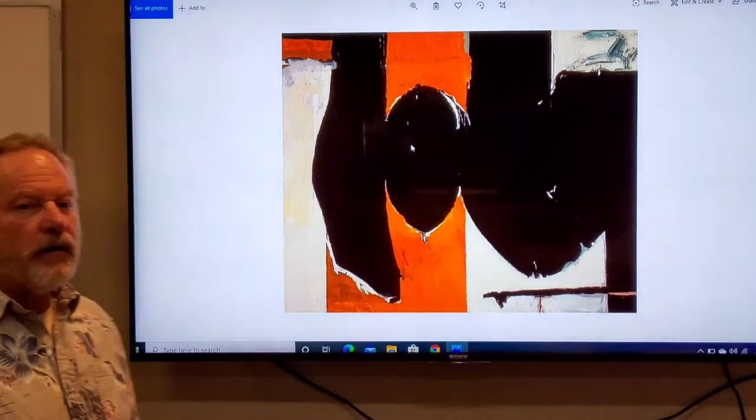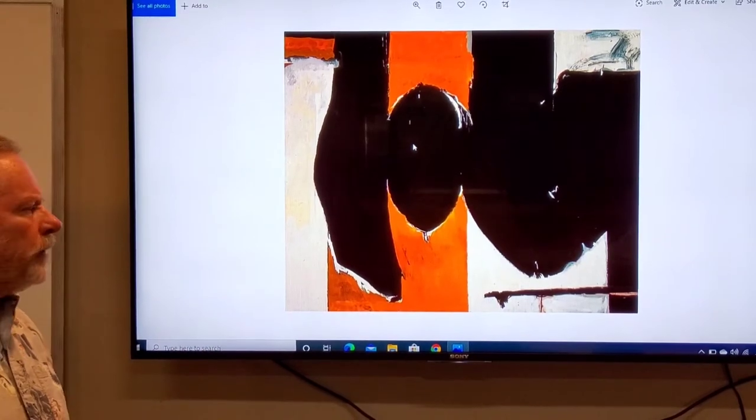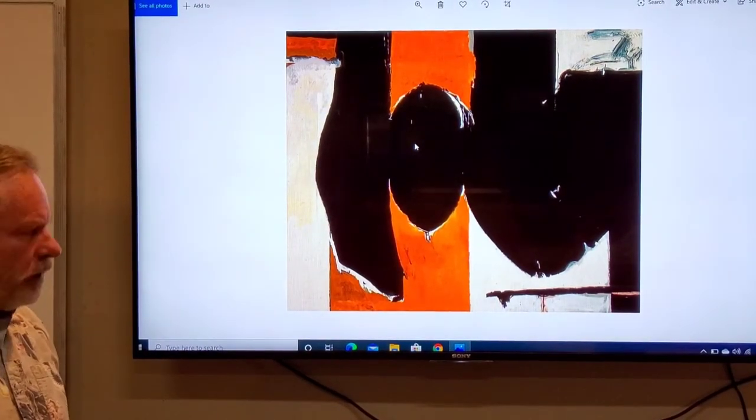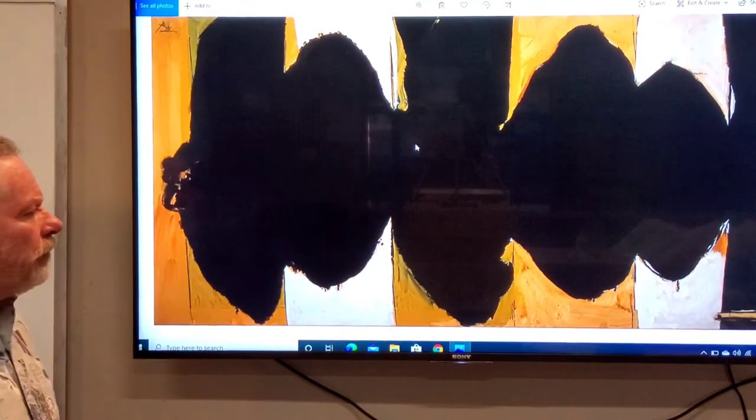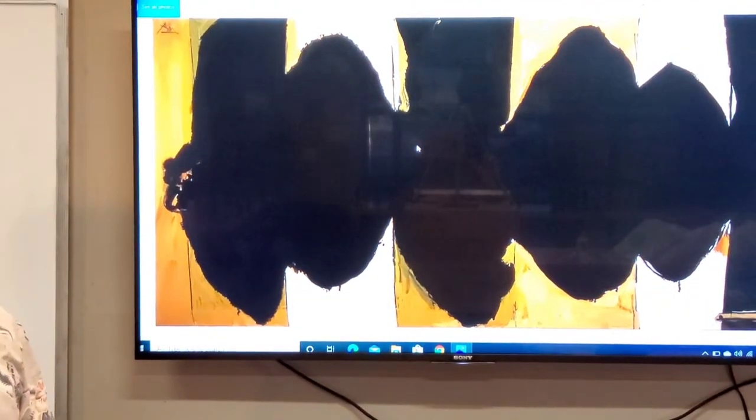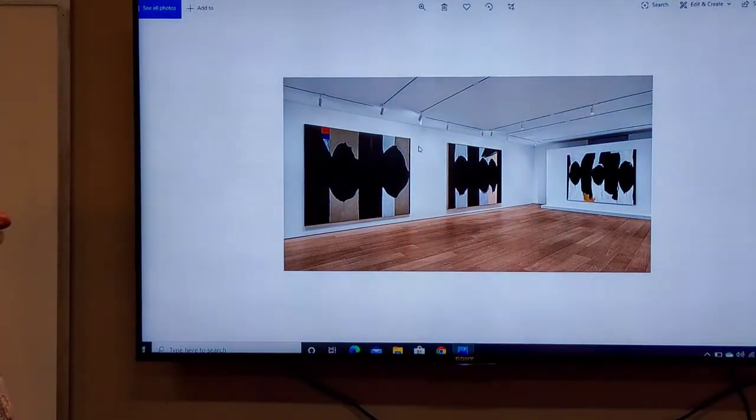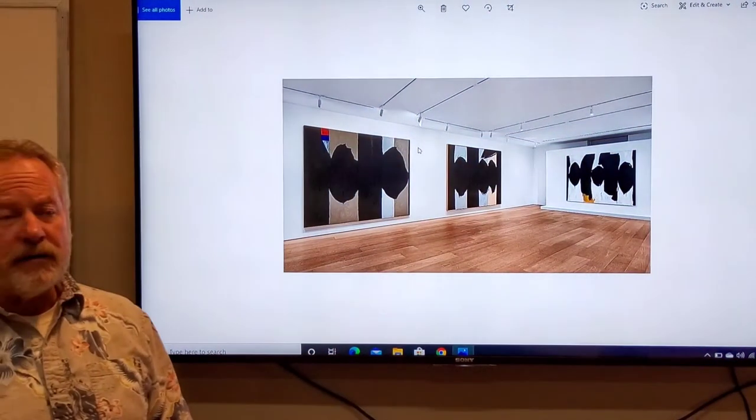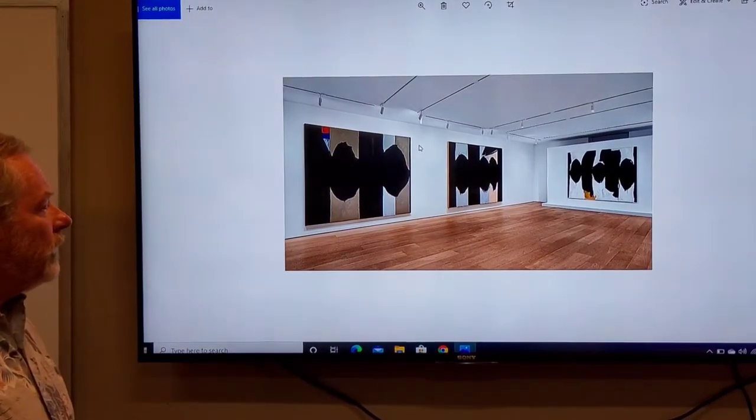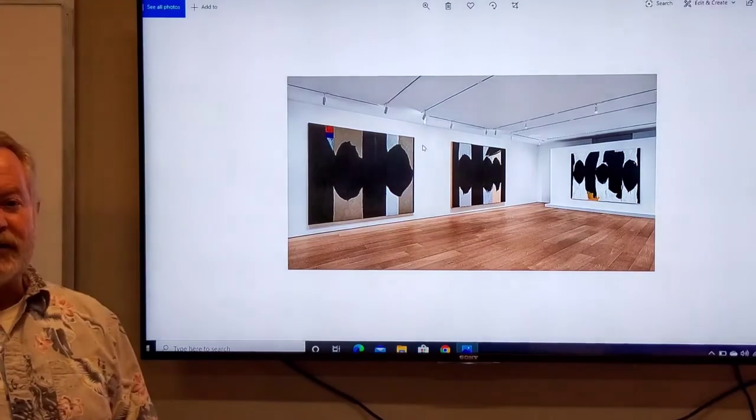Now these are more non-objective abstracts. This is Robert Motherwell. He liked to work large, although sometimes he would do prints that were quite a bit smaller. He liked to use contrast between very dark and very light values. So he used black and white quite a bit. This gives you an idea of the scale of his paintings. Very large. So this is the gallery and there's three of his paintings together.